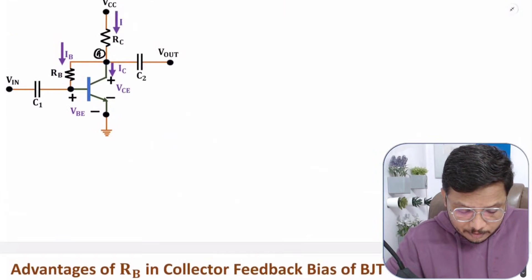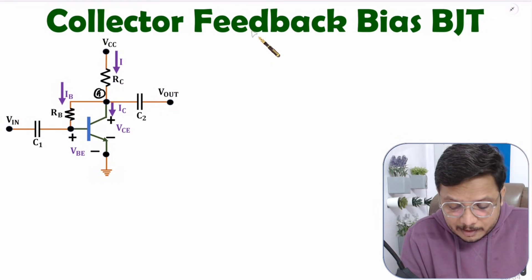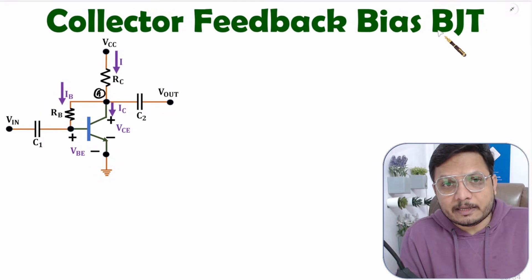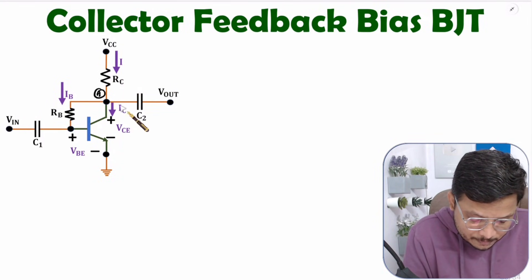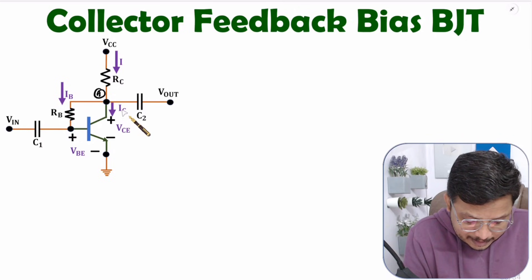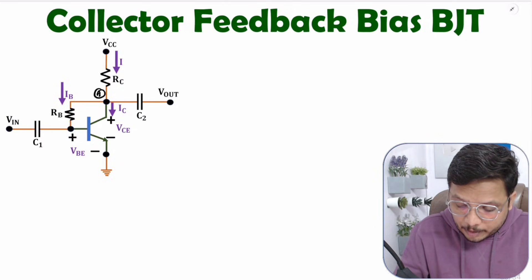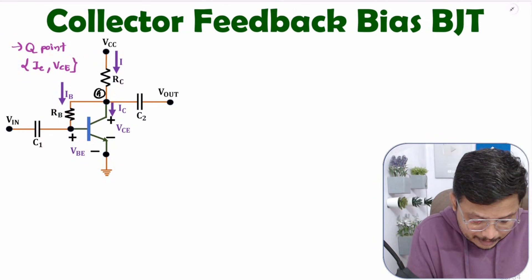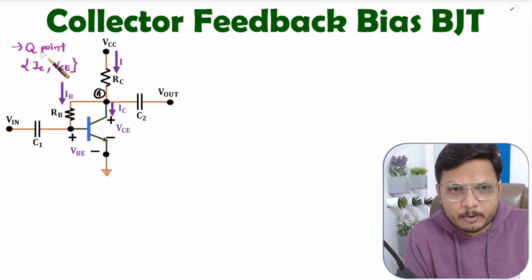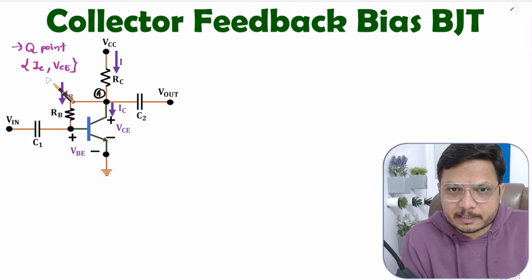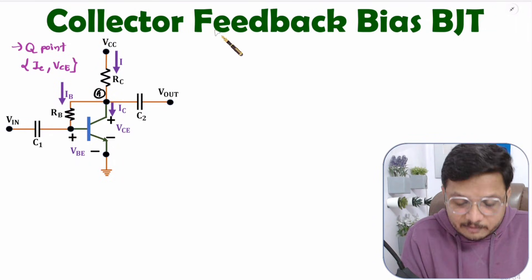Now in this video I'll explain collector feedback bias of BJT, where the operating point is defined by output current IC and output voltage VCE. I'll also explain the stability of this operating point with respect to different parameters regarding collector feedback bias.